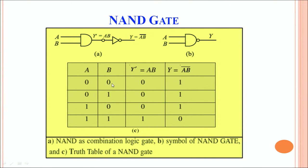In the truth table, A and B are the inputs. Y dash represents the output of the AND gate and Y represents the output of the NAND gate. When both A and B are 0, the AND gate output is 0, and inverting it gives a final output of 1. When A is 0 and B is 1, the final output is 1. When A is 1 and B is 0, the final output is 1. When both A and B are 1, the final output is 0. So the output of the NAND gate is the inverse of the AND gate output, and that's why we call it a NAND gate.